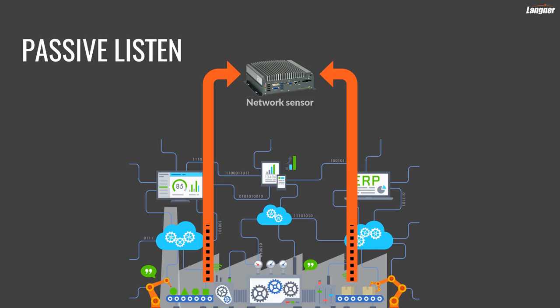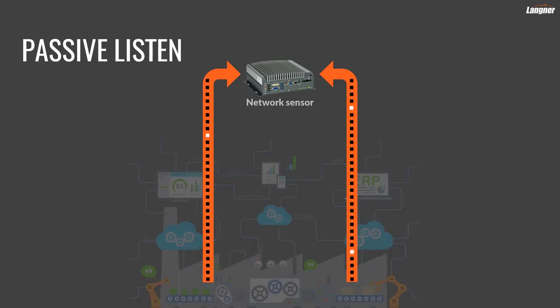Unfortunately, metadata required for asset discovery is deeply hidden in the network traffic. Finding the information that can be used to identify device make and model, firmware version, etc. is a task as difficult as finding a needle in a haystack and doesn't always yield accurate results.